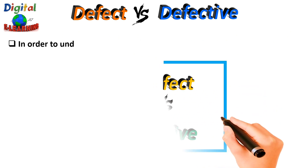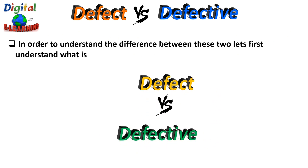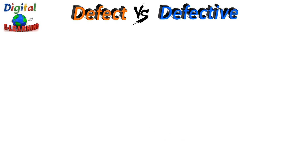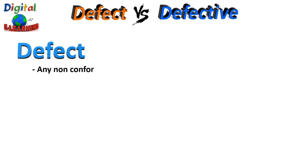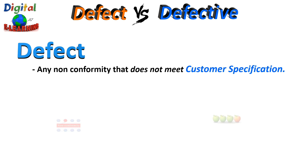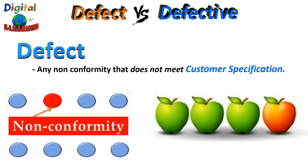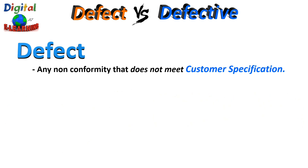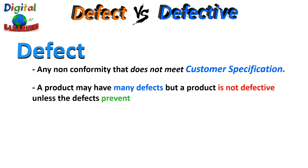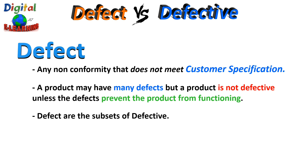In order to understand the difference between these two terms, let us first understand what they mean. A defect is any non-conformity that does not meet the customer specification. A product may have many defects, but the product is not defective unless the defect prevents the product from functioning. Defect does not necessarily mean that the product or service cannot be used — it only indicates the product result is not entirely as intended. Defects are subsets of defective.